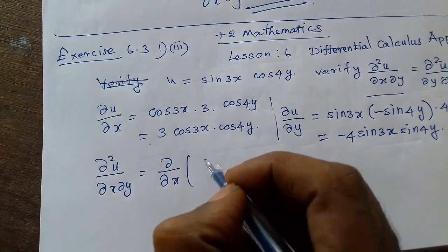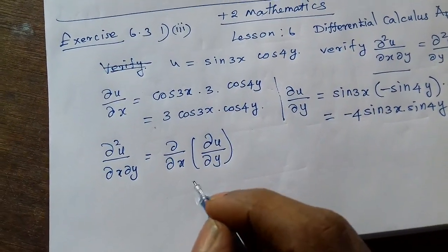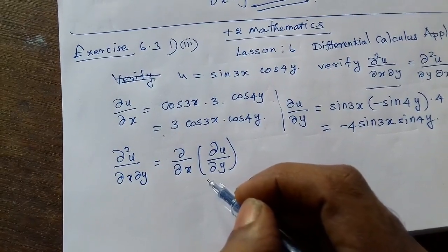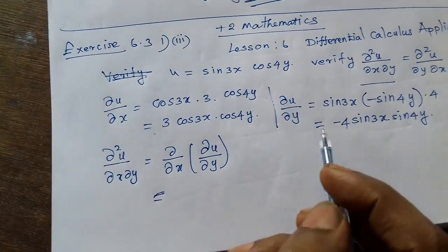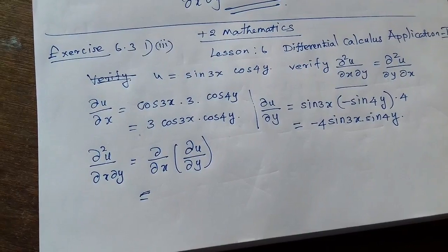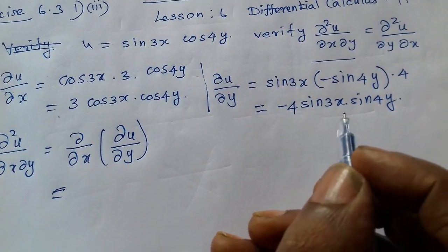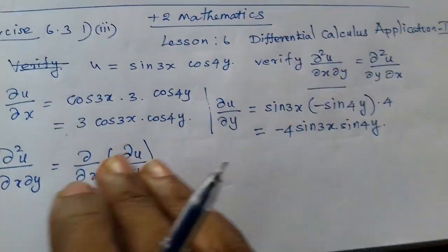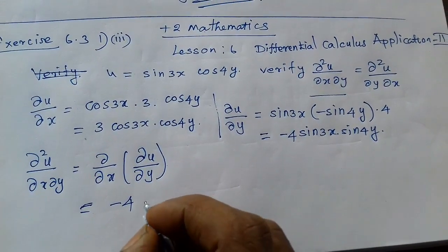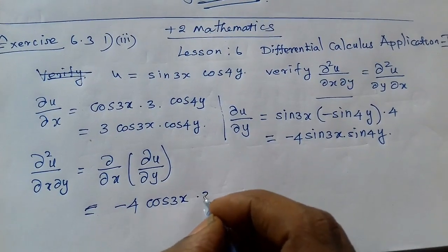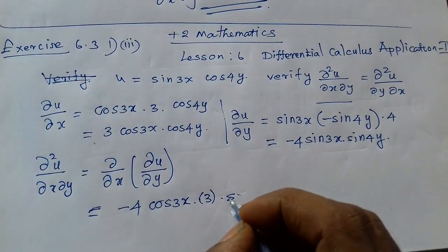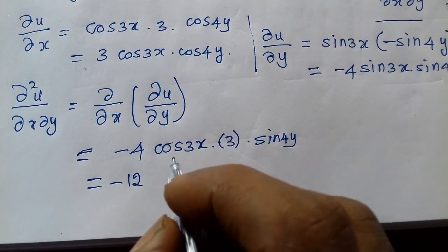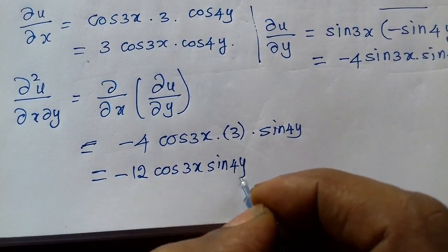Now find ∂/∂x of (∂u/∂y), that is differentiate ∂u/∂y with respect to x. sin4y is treated as a constant. Differentiate sin3x with respect to x gives cos3x, multiplied by 3. Result: -4cos3x · sin4y. This is Equation 1.